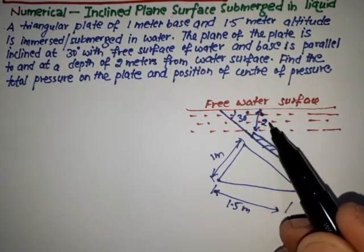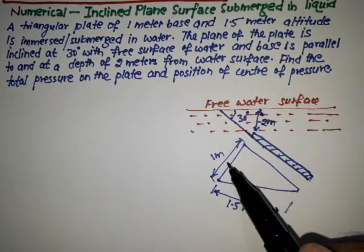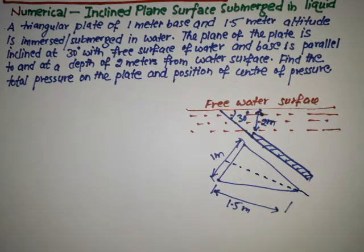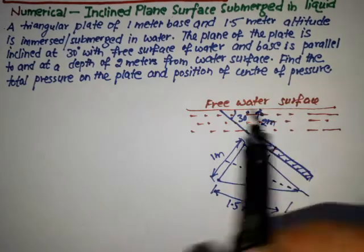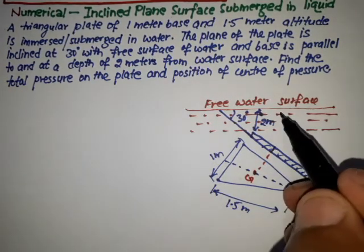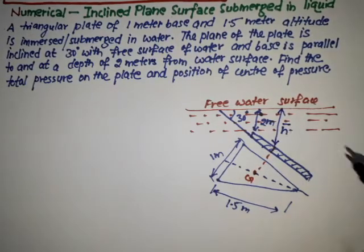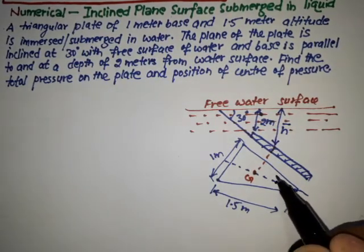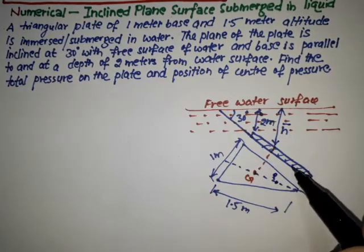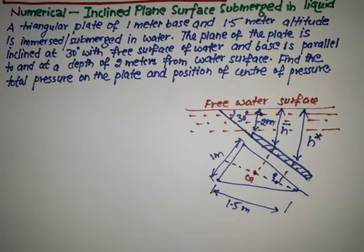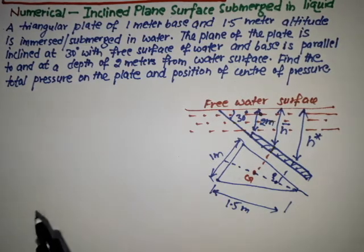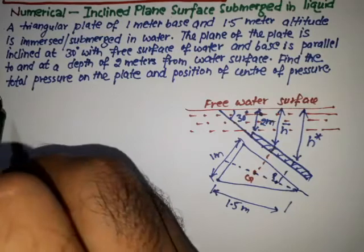The depth from the water surface is 2 meters. Here we plot the center of gravity, which is at a distance of h-bar from the free surface of the liquid. The center of pressure point is at a distance of h-star from the free surface. We need to find the center of pressure and also the total pressure force.